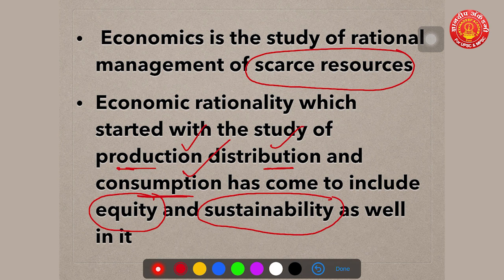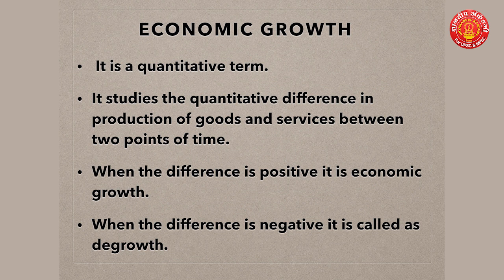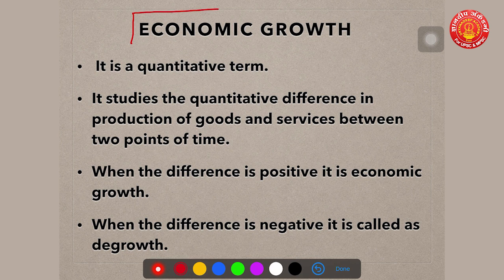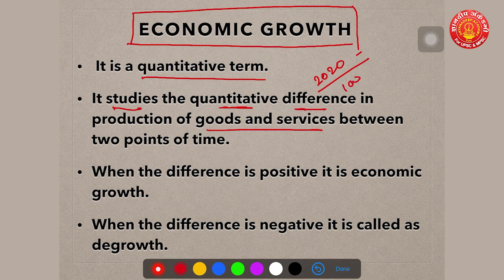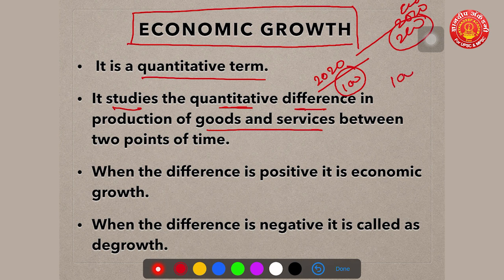Economic growth is a quantitative term — it talks about quantity and production, not quality. By definition, economic growth studies the quantitative difference in production of goods and services between two points of time. For example, if we produced 100 cars at the start of 2020 and 200 cars at the end of 2020, the difference of 100 cars represents economic growth.